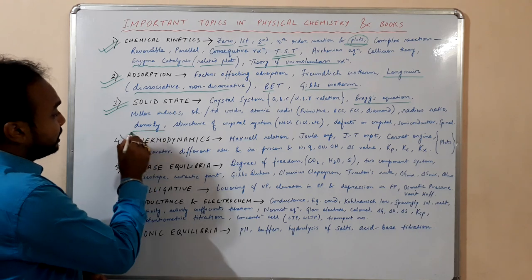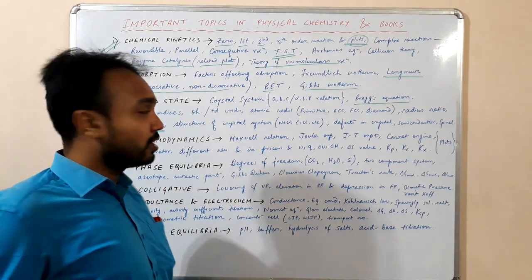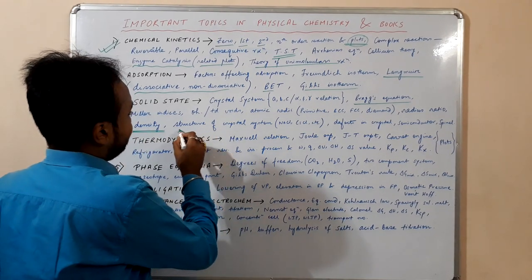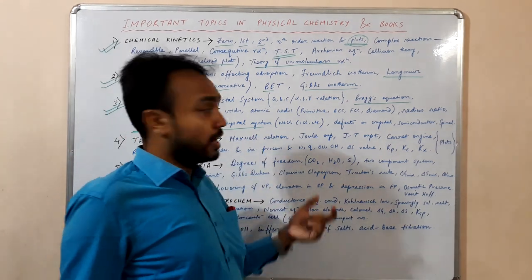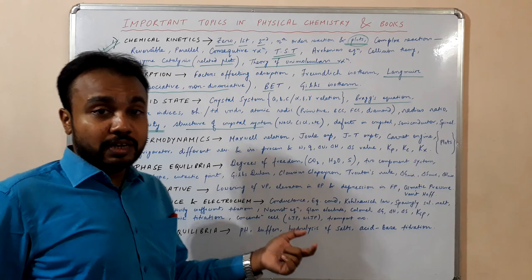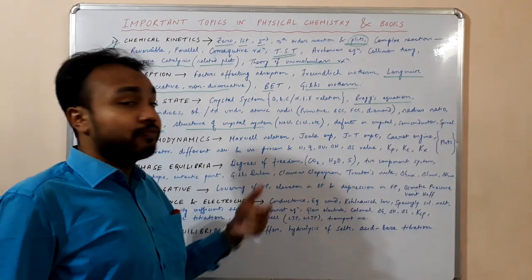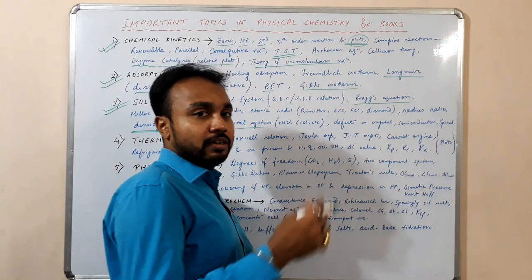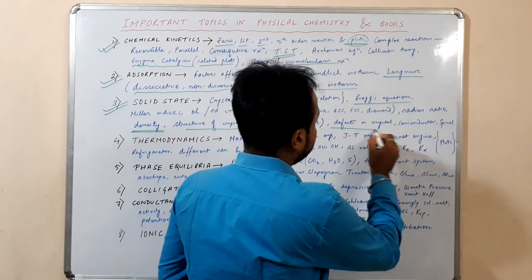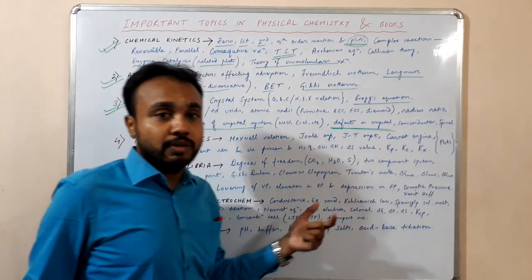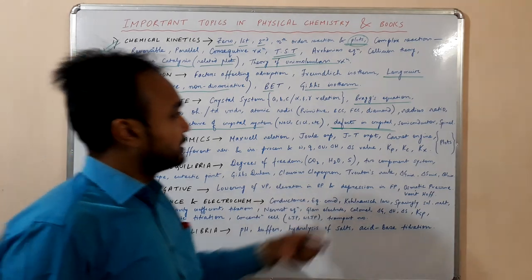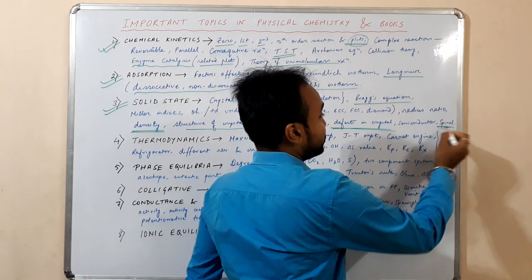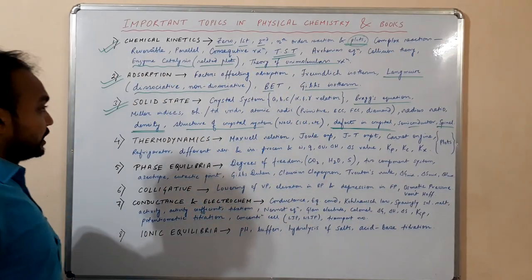Then read the structure of crystal systems — for sodium chloride, cesium chloride, fluorite structure, calcium fluoride, anti-fluorite structure, Na₂O, wurtzite, etc. Then the defects in crystal systems: Frenkel defect, Schottky defect, F-center, and everything. Then semiconductors — N-type, P-type, doping, and spinel, inverse spinel, and mixed spinel. That's all for solid state.